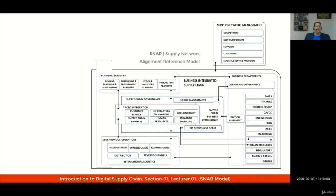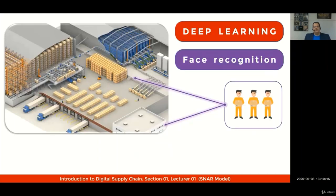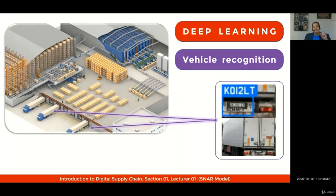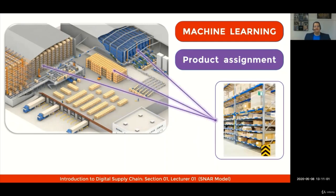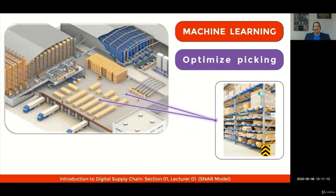I'll use the SNAR model to illustrate the impact of digital transformation in a warehousing operation. One possible approach is using the concept of deep learning, which you will learn during the course, to help with face recognition — applied when you enter the facility or to control access to specific areas. Deep learning can also be used for vehicle recognition, giving you speed and safety throughout your loading and unloading process. You can also use machine learning for product assignments within positions in your warehouse, closely updating the parameters of your WMS, and to optimize your picking operations and gain productivity.